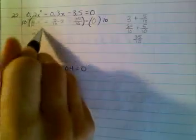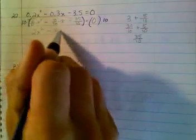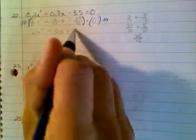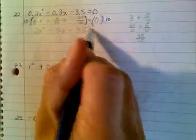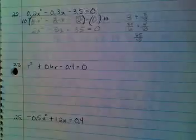Well, the 10s are going to cancel everywhere. So this is 2x squared minus 3x minus 35 equals 10 times 0 is simply still 0.